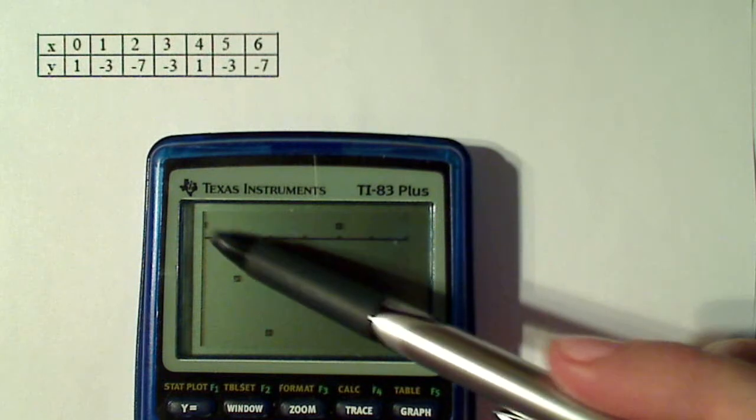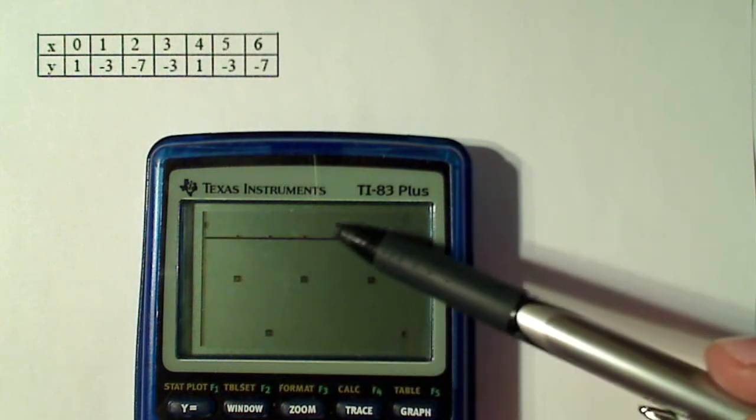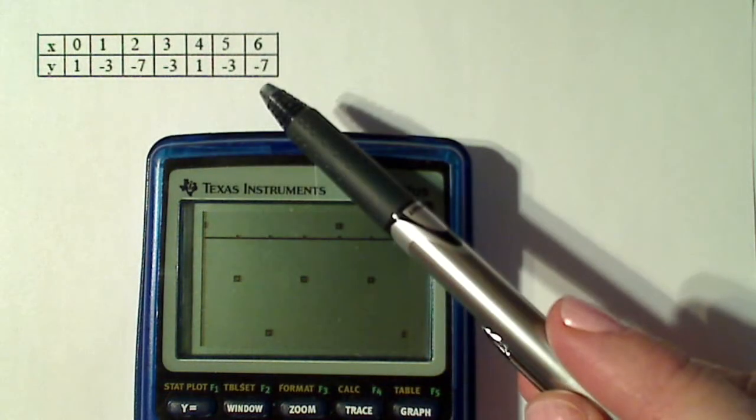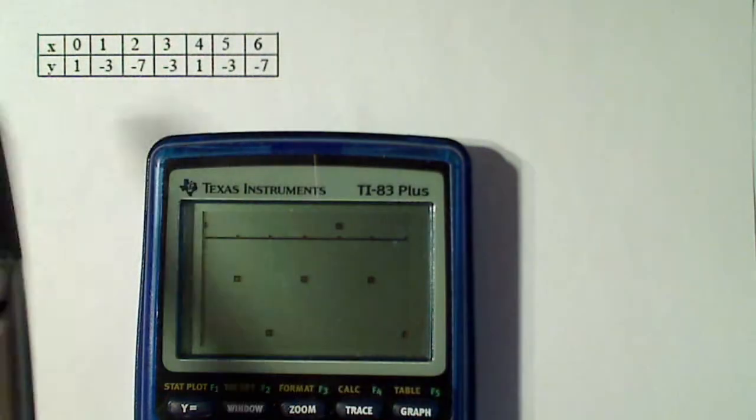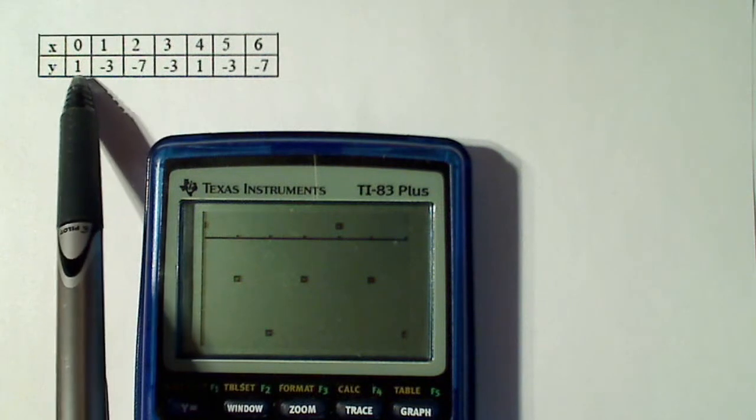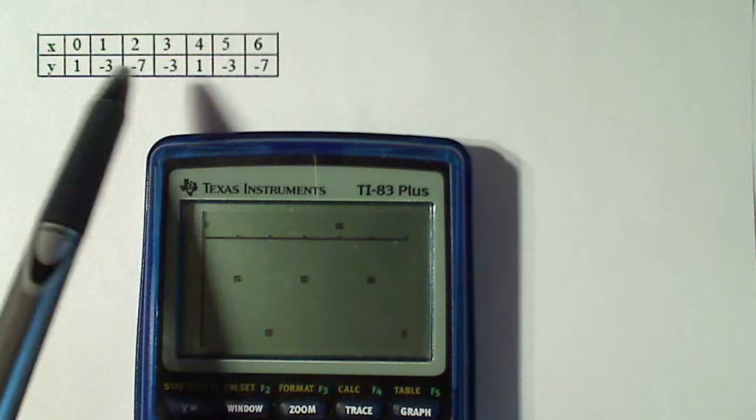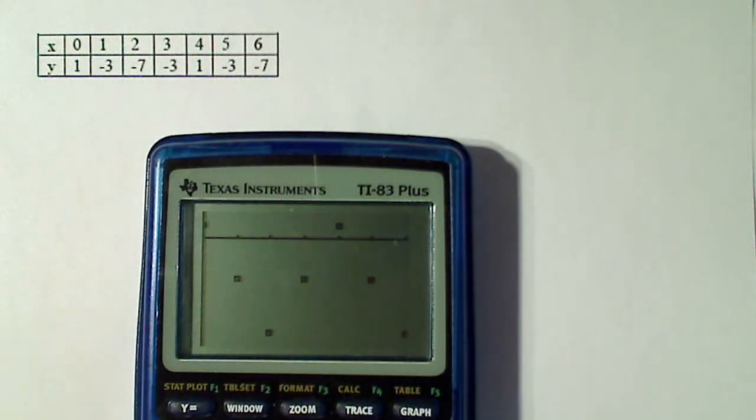So it looks like I'm getting 1.5 periods over the interval from one to six. So to actually determine the period, I noticed I go from a high point to another high point over four units. So it looks like that's what my period is.